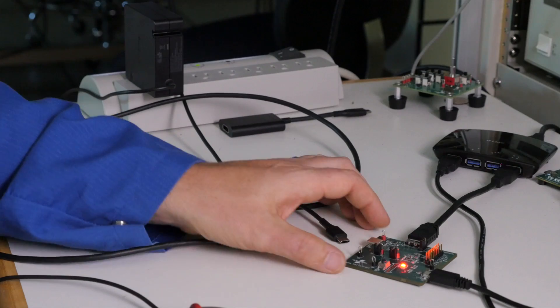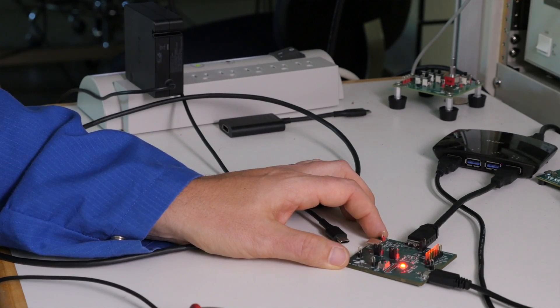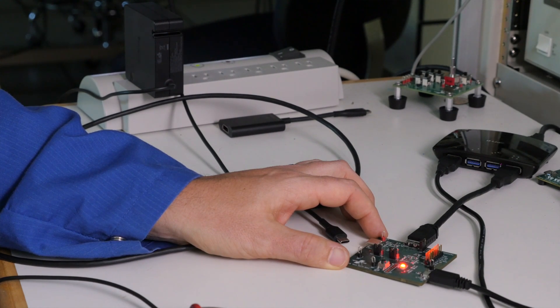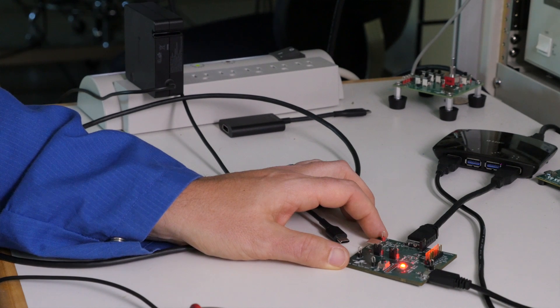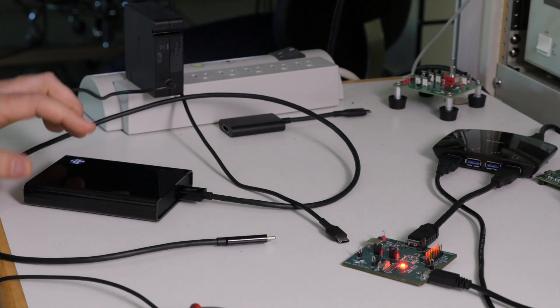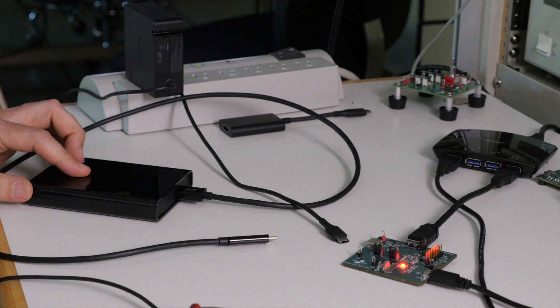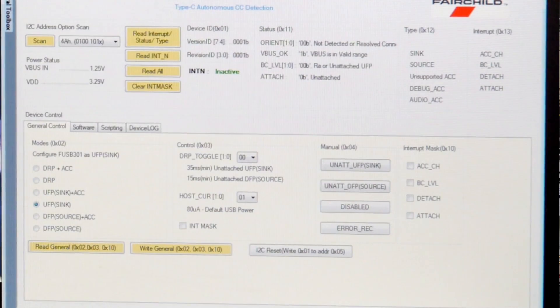Here, I have an evaluation board with both the FUSB301 Type-C port controller and the FUSB340 USB 3.1 SuperSpeed MUX. I also have a USB Type-C charger and a USB 3.1 hard drive with a USB Type-C adapter cable. The FUSB301 can be configured to match all the port types that the Type-C connector supports. For this demonstration, I will select a DRP or dual-role port.